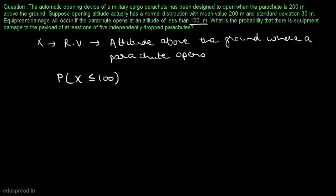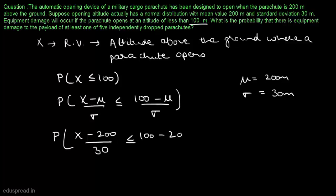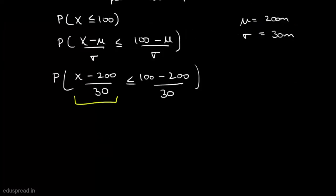Let's convert this into standard normal. We can write this is equivalent to finding the probability that (X minus mu) divided by sigma is less than or equal to (100 minus mu) divided by sigma. We are given that mu is equal to 200 meters and sigma is equal to 30 meters. So we can write this as (X minus 200) divided by 30, less than or equal to (100 minus 200) divided by 30. And we know that this quantity is Z.